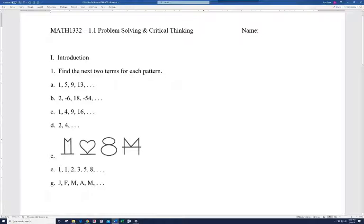Alright, so for A, you should have gotten 17 and 21. And the pattern is to just add 4. 1 plus 4 is 5, 5 plus 4 is 9, and so on. Another common pattern would be to subtract some number each time.